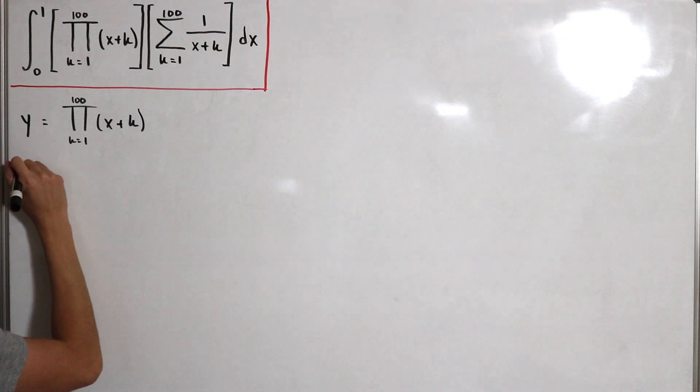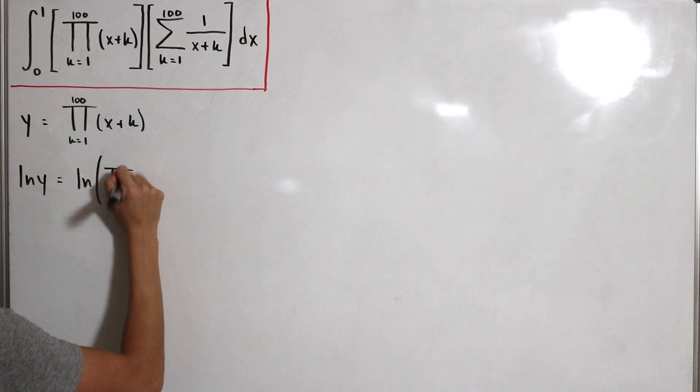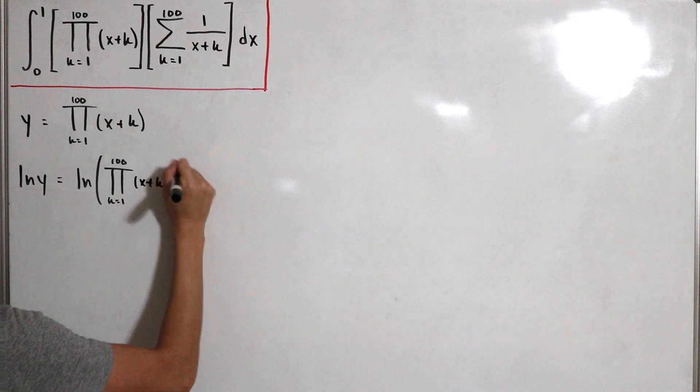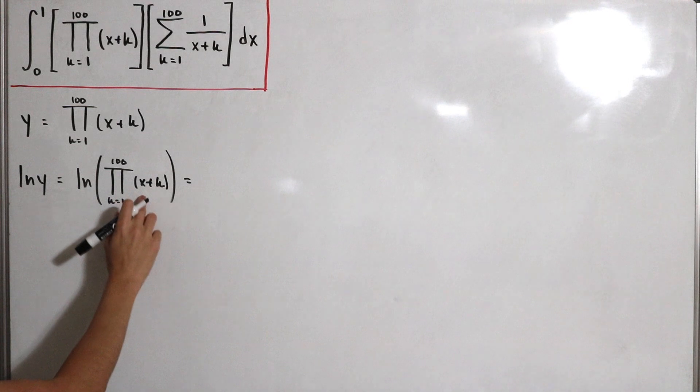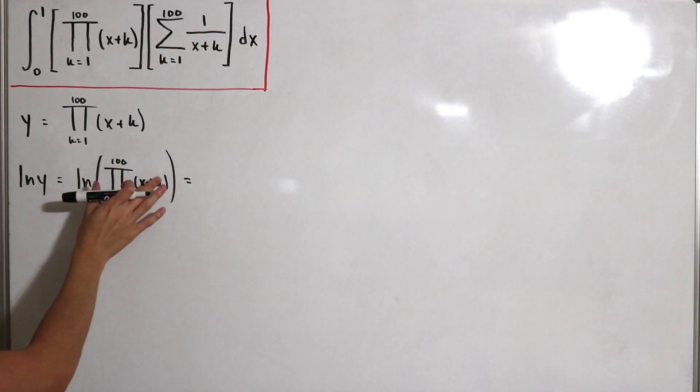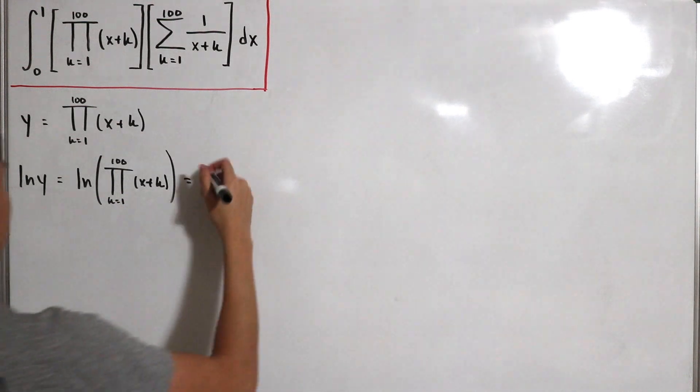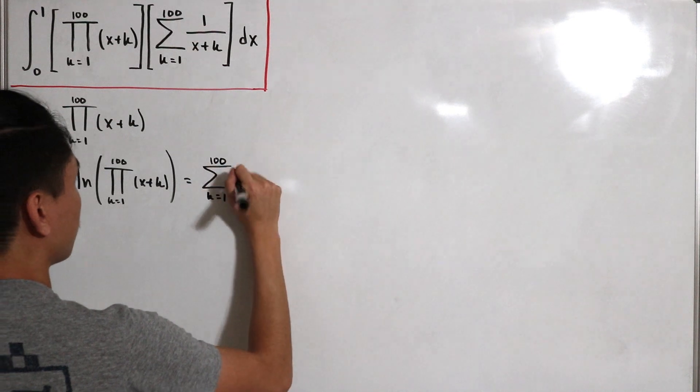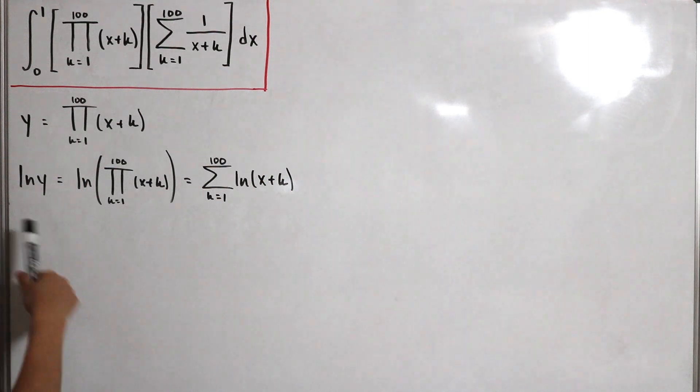Then we want to take the natural log of both sides. So we have ln(y) equals ln of the partial product from k equals 1 to 100 of x plus k. Using the rules of continuity, you can exchange this and put the natural log inside, which changes it to a summation series. So we write this as the sum from k equals 1 to 100 of ln(x plus k).